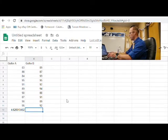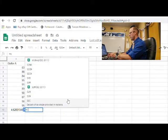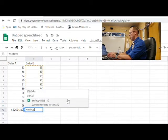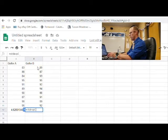Let's do the same thing for golfer B, equals STDEVP and then we'll highlight these, close the parentheses, hit enter and we get 2.5.